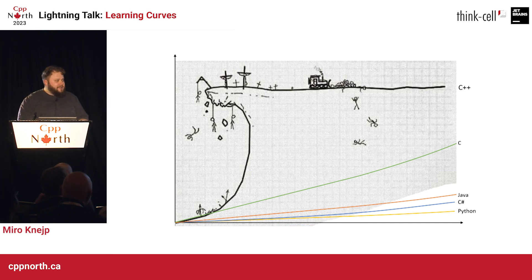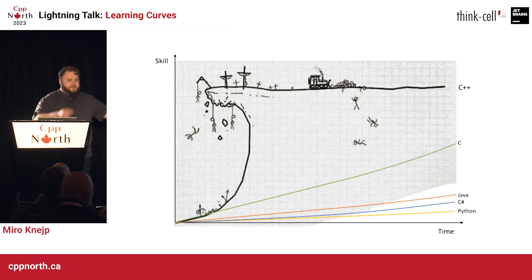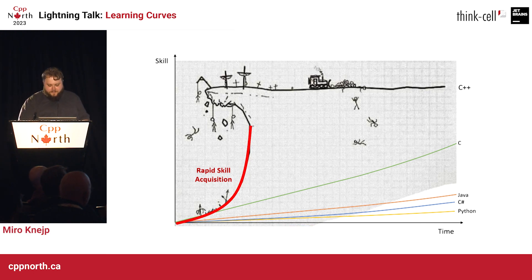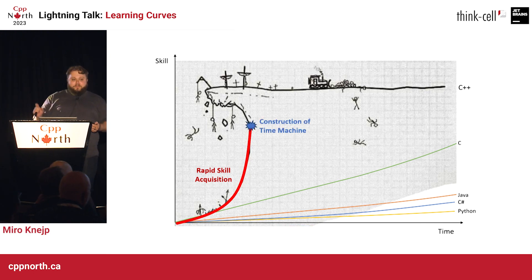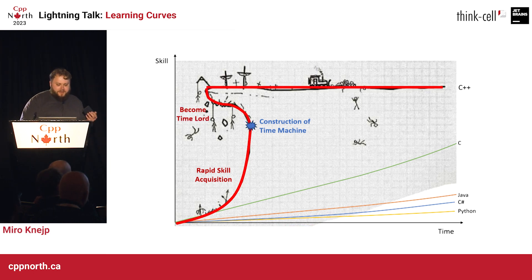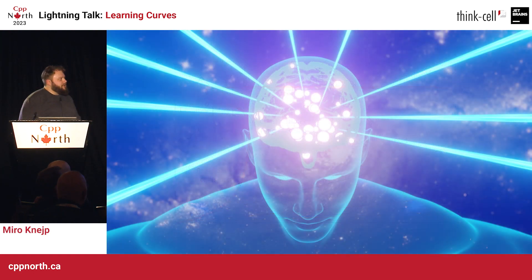But that's actually good, because what do these axes mean? Time. Skill. So what does that mean? We actually have a rapid phase of skill acquisition to the point where we can build a time machine. As we go backwards in time, we become a time lord, reach the top, and become one with the universe.